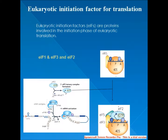These EIFs function in forming a complex with the 40S ribosomal subunit and met-tRNA, called the 43S pre-initiation complex (PIC), which then recognizes the five-prime cap structure of messenger RNA. They assist in recruiting the 43S PIC to mRNA, promoting ribosomal scanning, and regulating recognition of the AUG initiation codon to form the 48S complex.